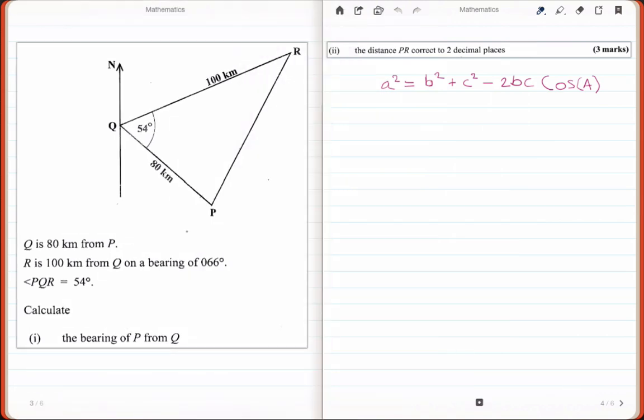This question, as we can see from the diagram, is a bearings question with some information already on it and written information. It says Q is 80 kilometers from P, R is 100 kilometers from Q on a bearing of 066 degrees, angle PQR is 54 degrees, and we are asked in the first question to calculate the bearing of P from Q.